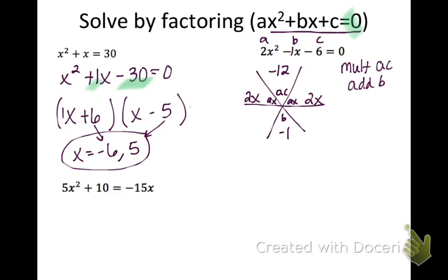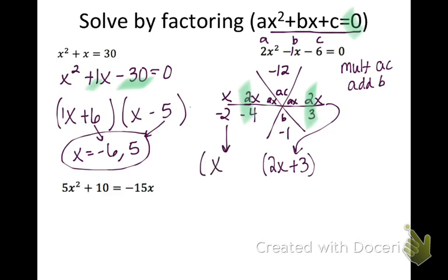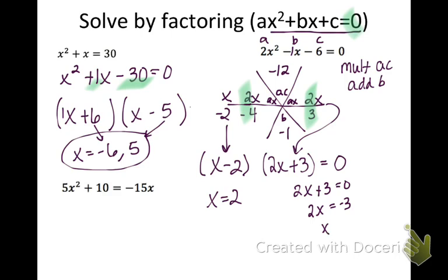The two numbers that multiply to negative twelve and add to negative one are negative four and positive three. You can check those in your calculator, but be very careful about the negative — if you switch it and put negative three and positive four, you'll get the rest of the problem wrong. The last step with the star method is to simplify the fractions if possible. Two over three does not simplify, so that becomes two x plus three. Two over negative four does simplify — divide both by two to get x over negative two, so this becomes x minus two. Setting each part equal to zero, I get x equals two and x equals negative three over two.